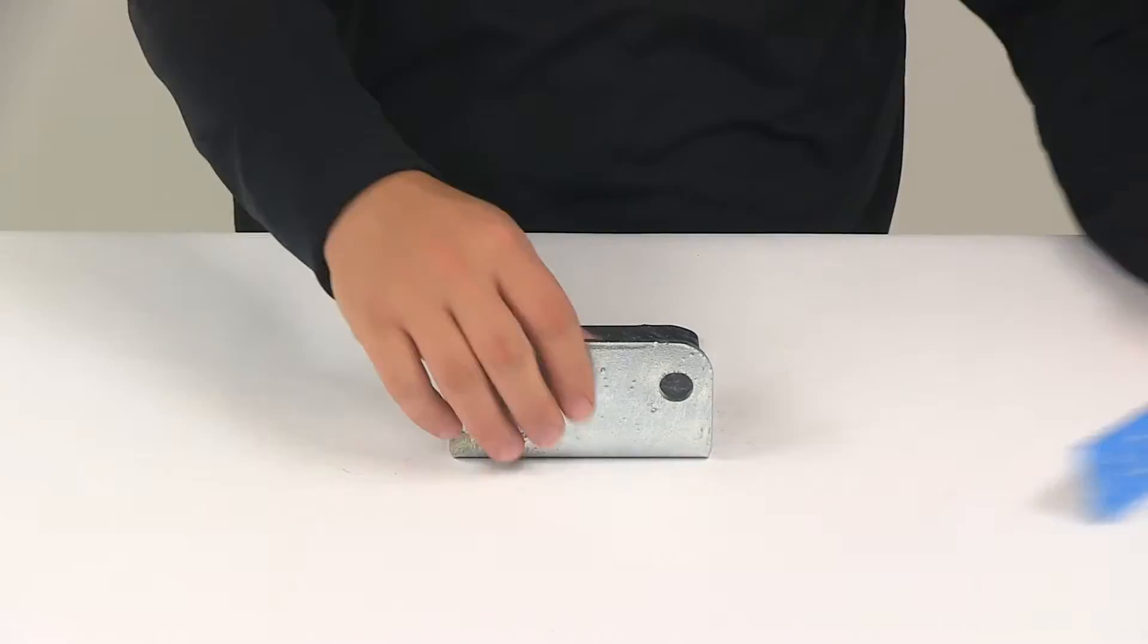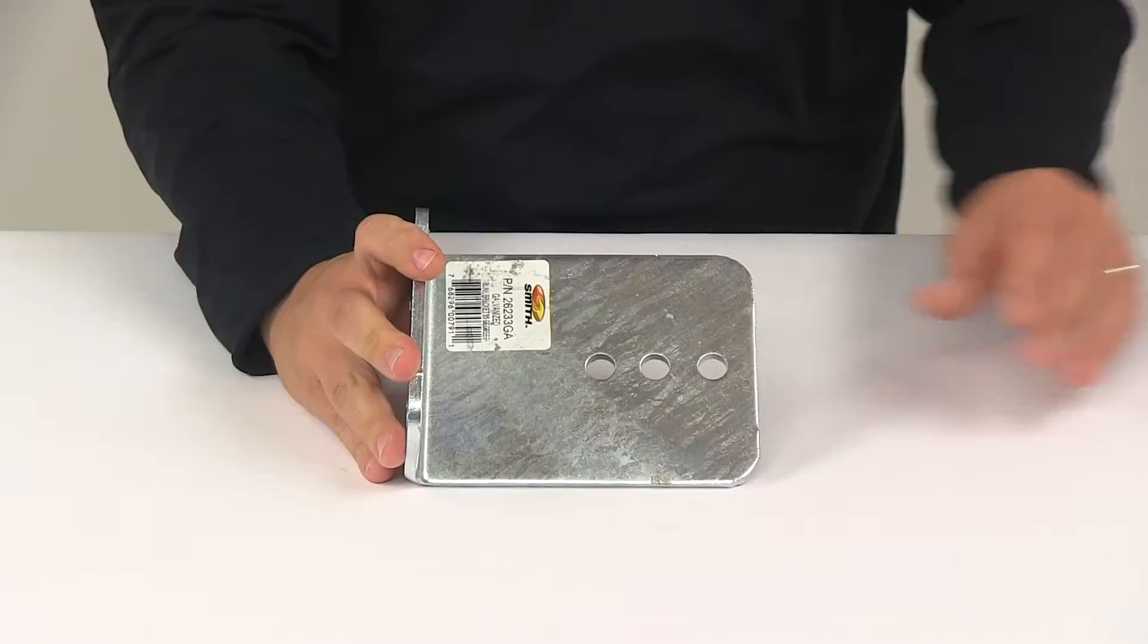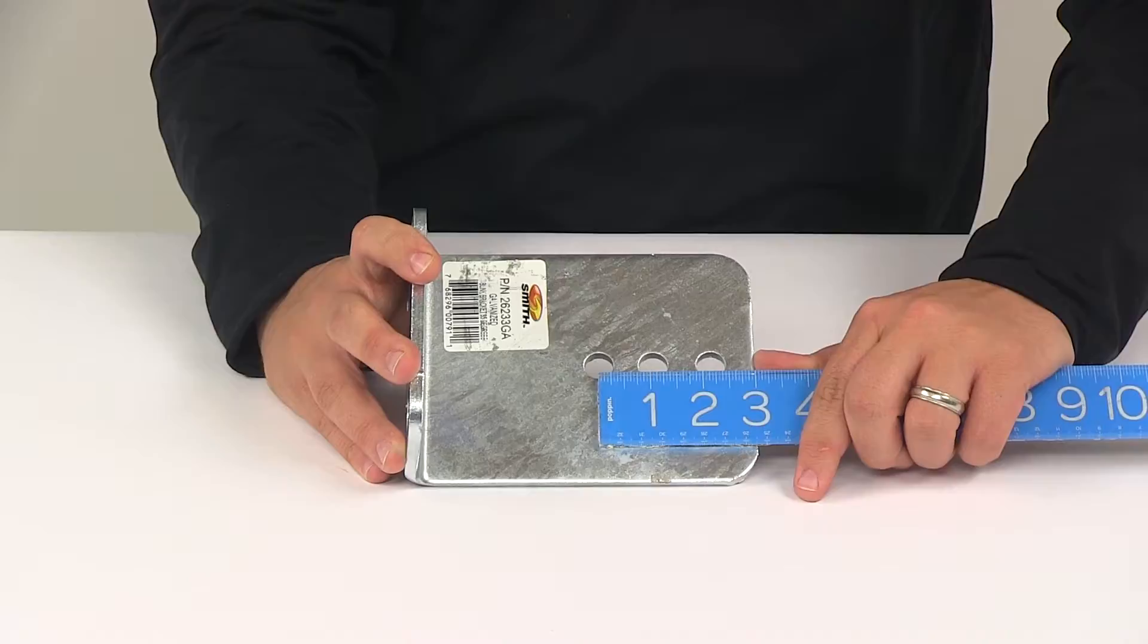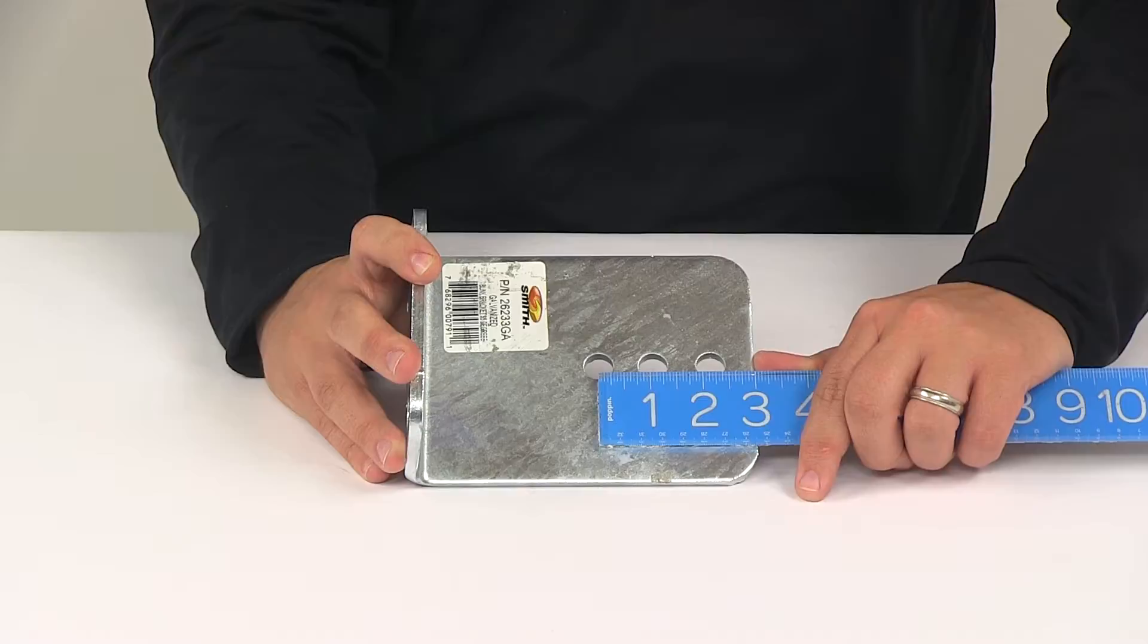And then you're going to have three bunk board mounting holes. The distance that we have between those, center on center, that's going to measure about one and one sixteenth of an inch apart to one and one eighth of an inch apart. The distance, center on center, between the two outer holes is about two and three sixteenths of an inch.